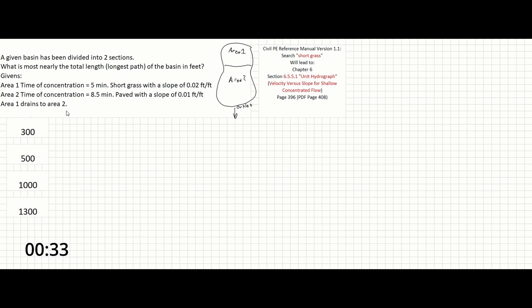We're being asked to find the total length of the basin, and we know that area 1 drains into area 2. To find that length, we need to use the time of concentration and the velocity of each area.